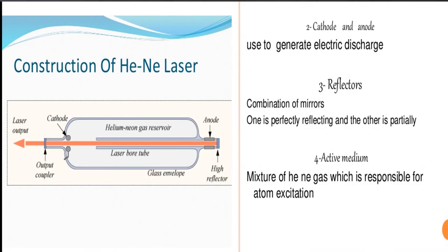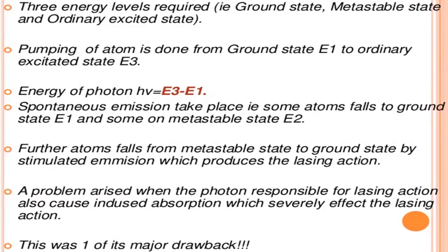The construction consists of two cathodes and anodes used to generate electric discharge, three reflectors — one mirror is perfectly reflecting and the other is partially reflecting — and the active medium, which is the mixture of helium and neon gas responsible for atom excitation. Three energy levels are required: the ground state, the metastable state, and the ordinary excited state.